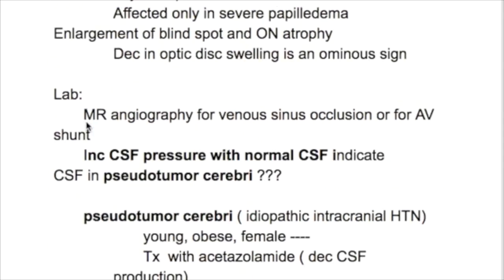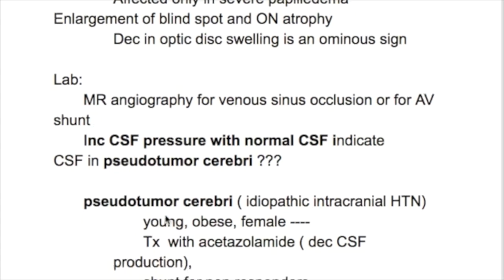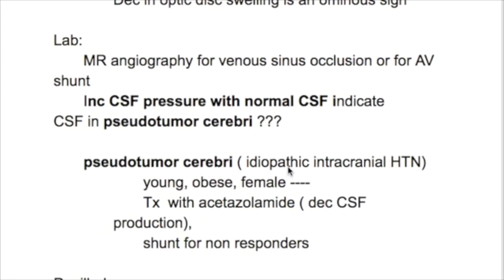What investigation is done? Magnetic resonance angiography for venous sinus occlusion or for AV shunts. What is pseudotumor cerebri? Increased CSF pressure with normal CSF indicates pseudotumor cerebri, also called idiopathic intracranial hypertension. It occurs in young obese females and is treated with acetazolamide, which decreases CSF production. A shunt is done for non-responders.